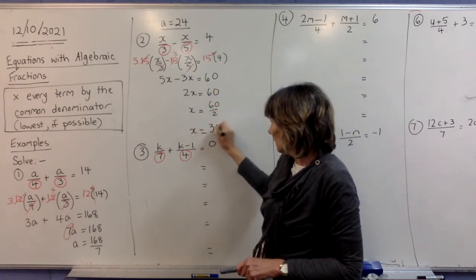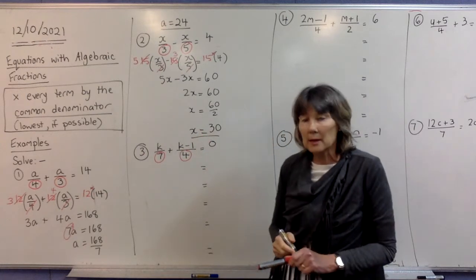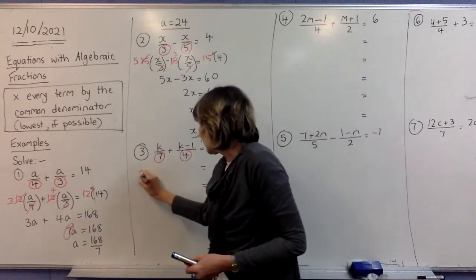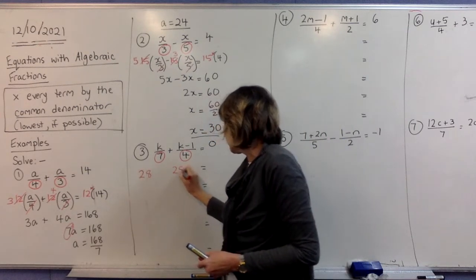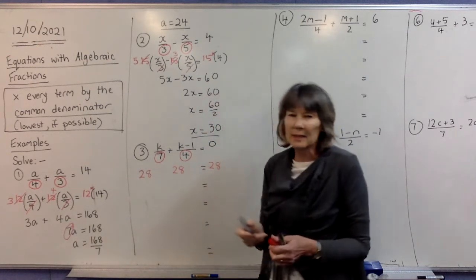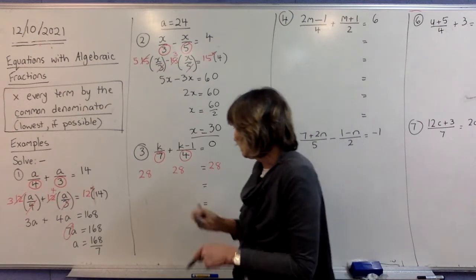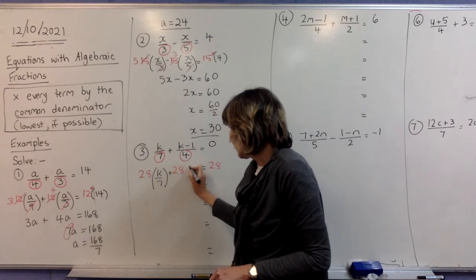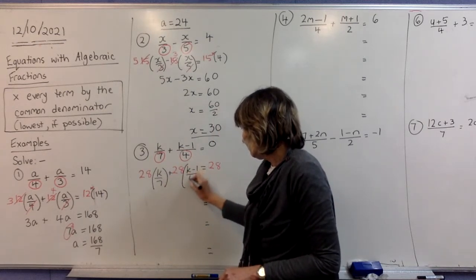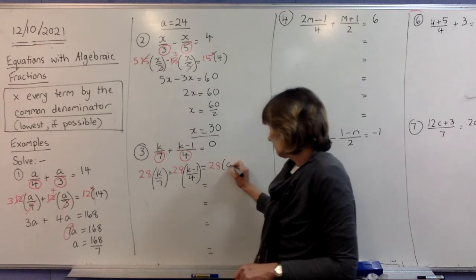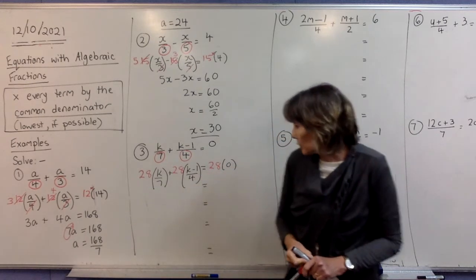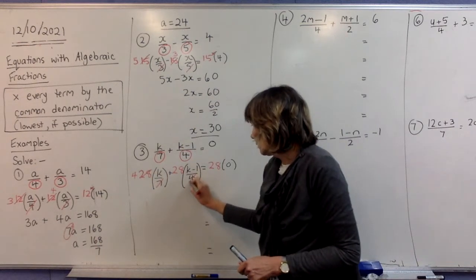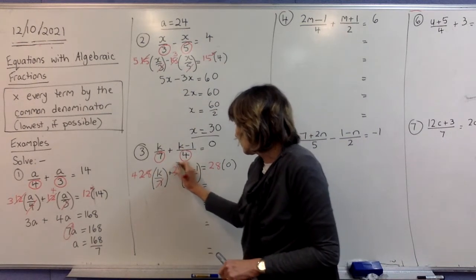For the next one, our common denominator for 7 and 4 is 28, so we're going to multiply all three terms by 28. Copy everything else like we've been doing. Now do our cancelling: 7 cancels with 28 to give you a 4, and 4 cancels with 28 to give you a 7.